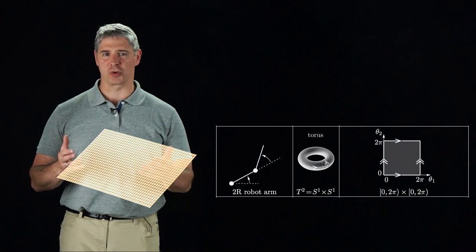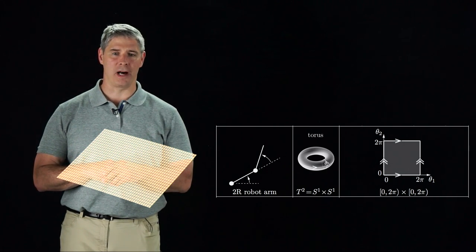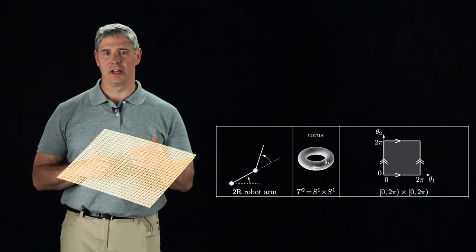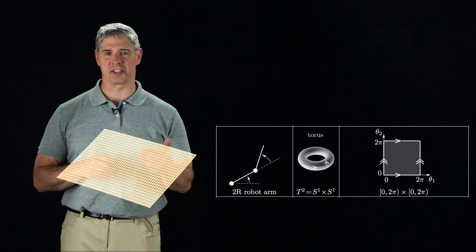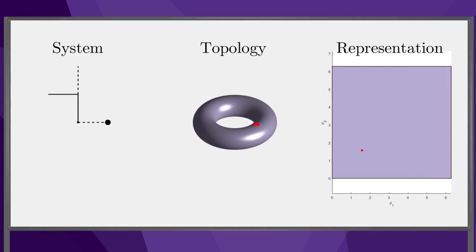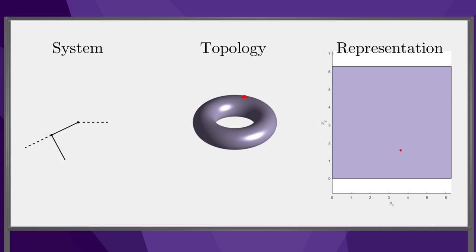Because of this cutting, which means that the square and the torus do not have the same topology, even if the configuration on the torus moves smoothly, the coordinate representation changes discontinuously at zero and two pi. In this video, you can see that as the robot moves, the coordinate representation jumps suddenly from one edge of the coordinate square to the other.